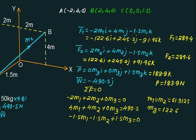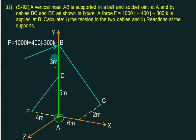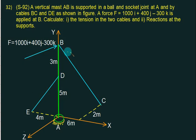All answers are in Newtons. In the next case, we have a vertical mast — a vertical pole of large size — supported by a ball-and-socket joint at point A. There is cable BC and cable CD, so we have two cables. An applied force of plus 400j minus 300k is given. We need to calculate the tension in the two cables and the reaction at the support.